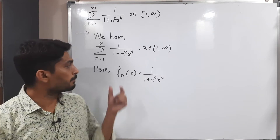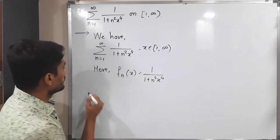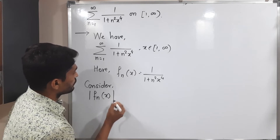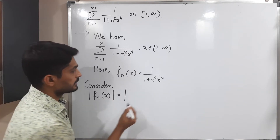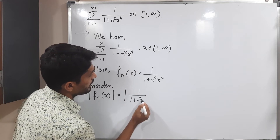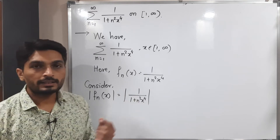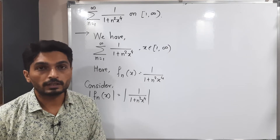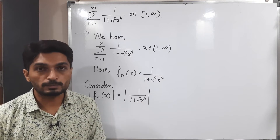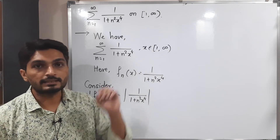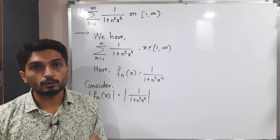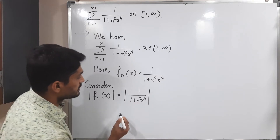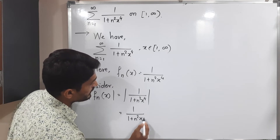In the Weierstrass M-test, we take the modulus of fn(x). Consider |fn(x)|, which equals 1 upon (1 + n² x⁴). Since 1 is positive, n² is a positive real number, and x⁴ is positive (as the power is even and x ≥ 1 on this interval), the expression is always positive. So there is no need for the modulus, and this equals 1 upon (1 + n² x⁴).